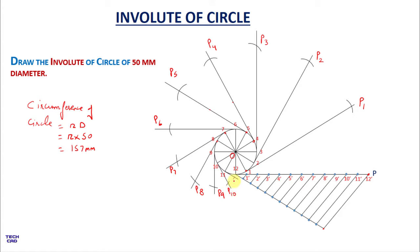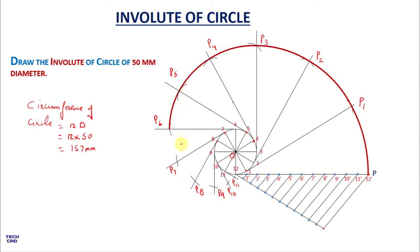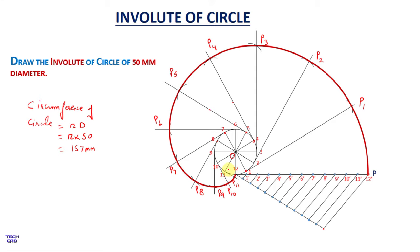Now we have all the profile points for the involute of the circle. Join them freehand: starting from point P, then P1, P2, P3, P4, P5, P6, P7, P8, P9, P10, P11, and stop at point 12. This is the involute of our circle of 50 mm diameter. I hope you understand. If you have any queries, comment in the comment section. Thanks for watching, be happy.